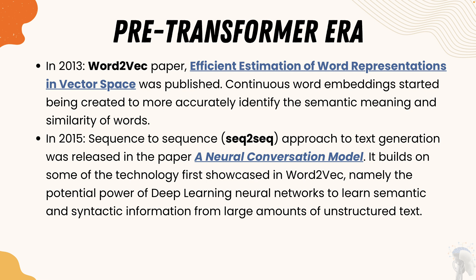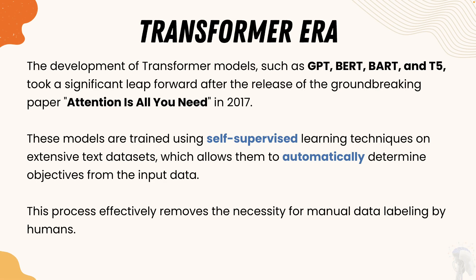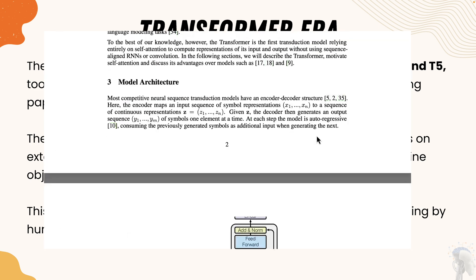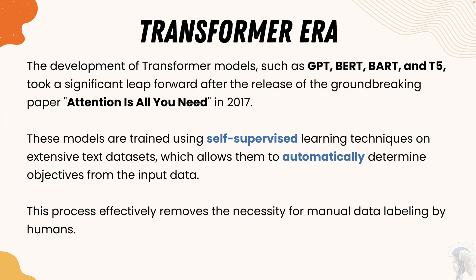Still, something important was missing in all these approaches. The transformer era came in from 2017, when models such as GPT, BERT, BART, and T5 took a significant leap forward following the groundbreaking paper 'Attention Is All You Need' in 2017. These models are trained using self-supervised learning techniques on extensive text datasets, which allow them to automatically determine objectives from input data — effectively removing the necessity of manual data labeling by humans. The 'Attention Is All You Need' paper was the stepping stone for all the models we use today.